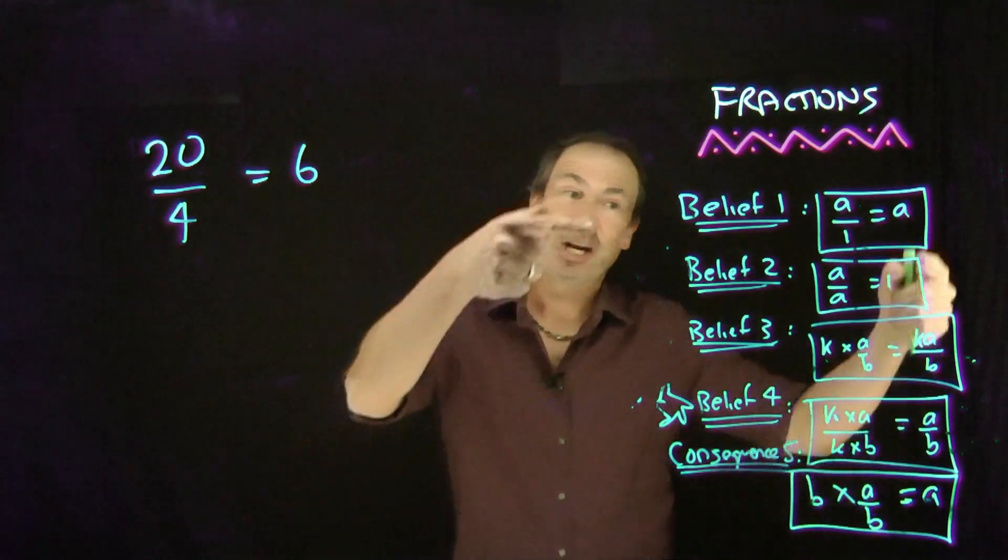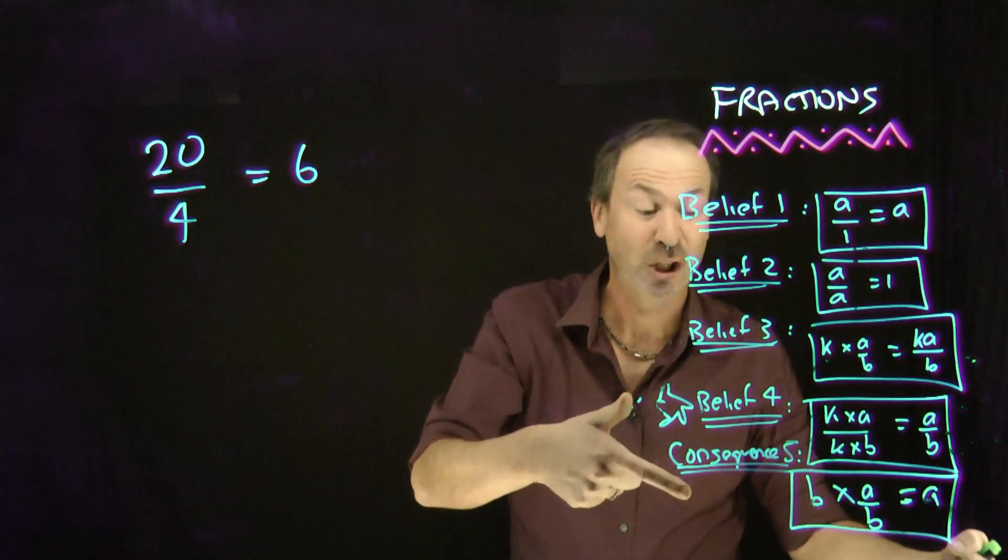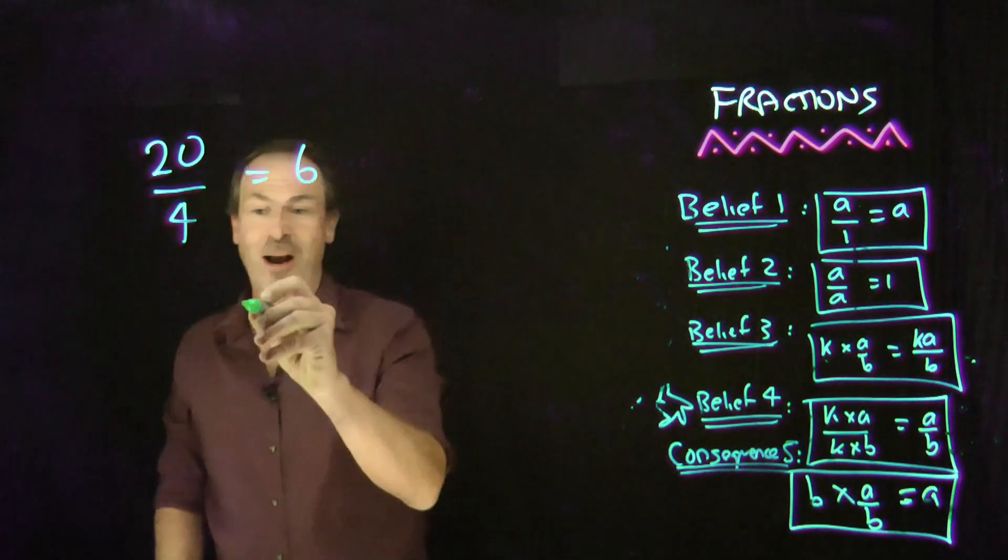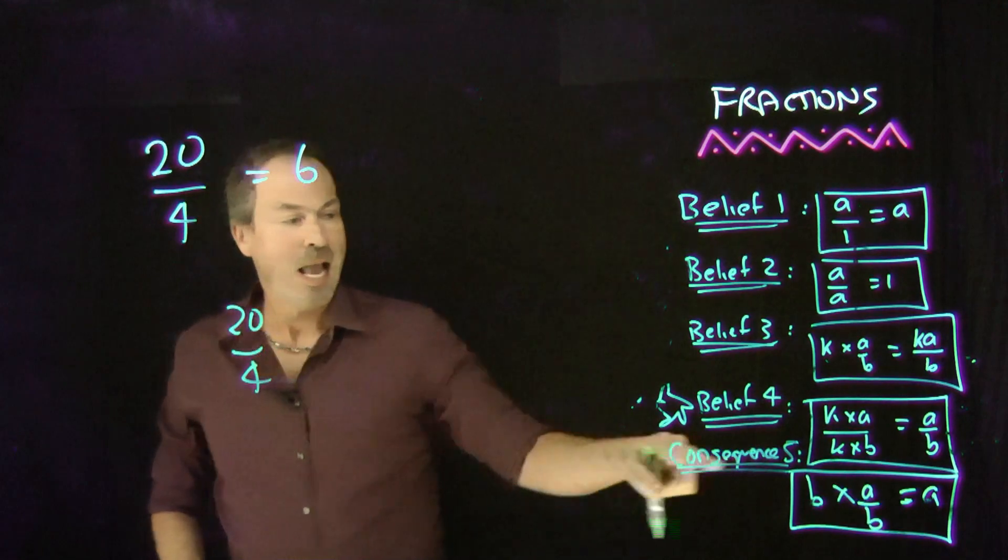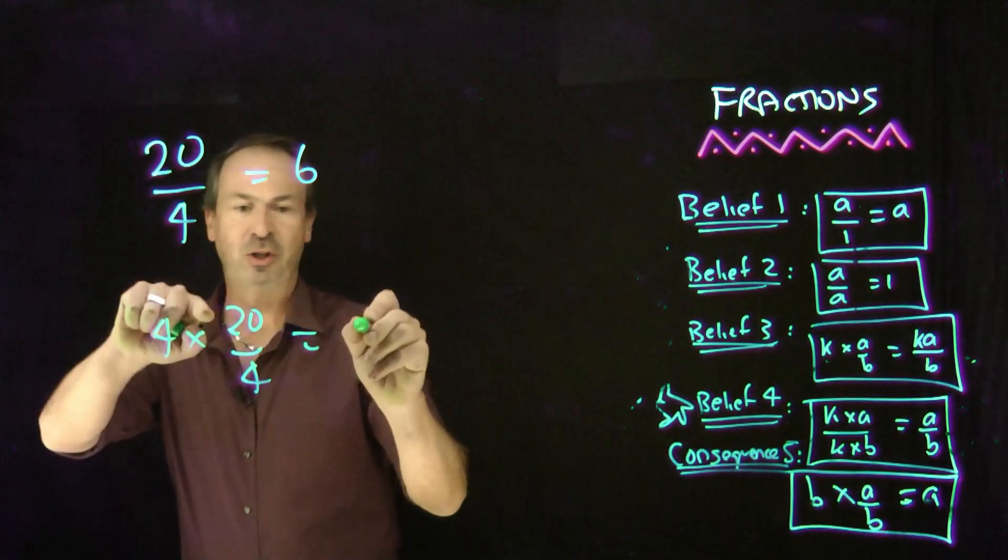Well, the answer is that actually there is. There's a lovely check right in our list of fraction rules. In fact, consequence number 5 provides a lovely check. It says that if I took my fraction 20 over 4 and multiplied by the denominator 4 times that, I should get the numerator, which is 20.